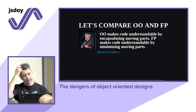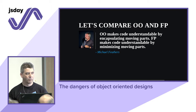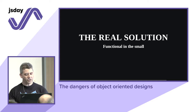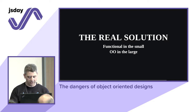Let's compare object orientation and functional programming in principle. They're not so different — similar goals, different approaches. Object orientation aims to make code understandable by encapsulating moving parts. Functional programming does it by minimizing moving parts. The real solution: functional style in the small, and object-oriented in the large.